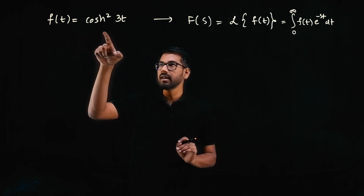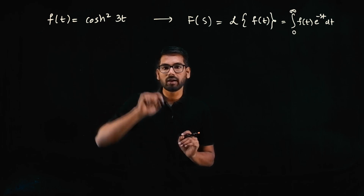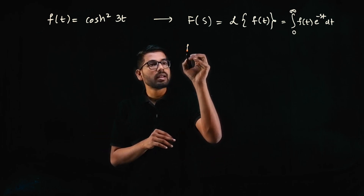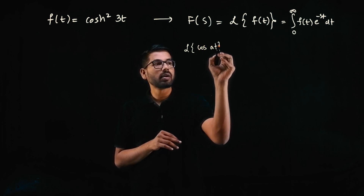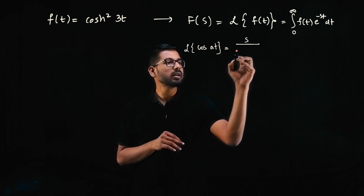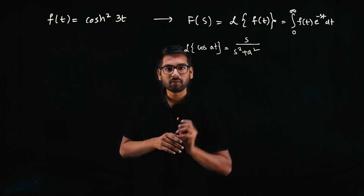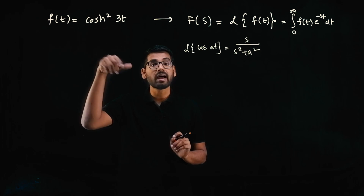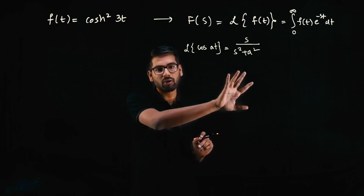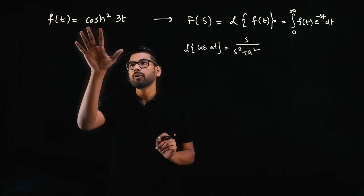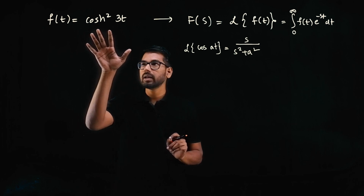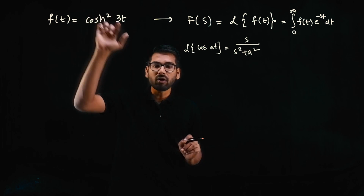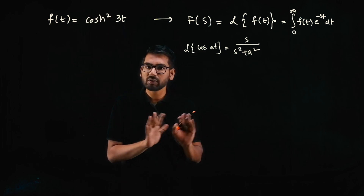In this case, what we have is cosh²(3t) — cos hyperbolic squared. If you look at the table, we have the Laplace transform of cos, which is s over s²+a². But this is not a cos function, this is a cosh (hyperbolic cosine) function. And even if it were cos, cos² is not the same as cos, so we need to simplify first.